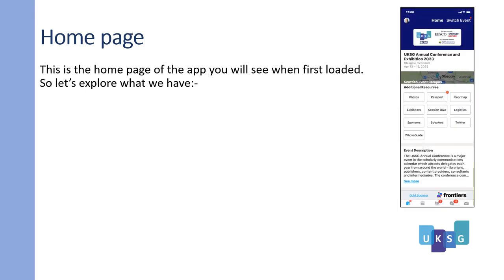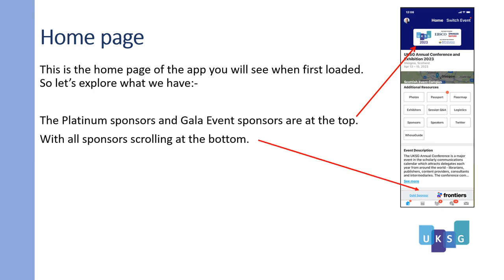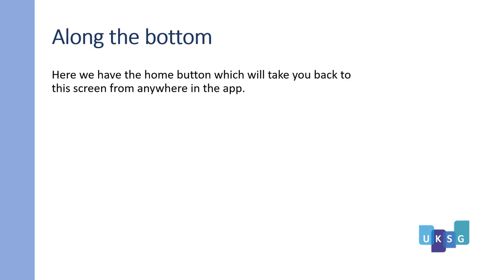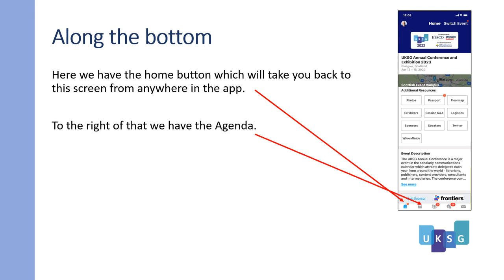This is the home page of the app you will see when first loaded. The platinum sponsors and Gala event sponsors are at the top, with all the sponsors scrolling at the bottom. Along the bottom of the home page, we have the home button, which will take you back to this screen from anywhere in the app. To the right of that, we have the agenda.